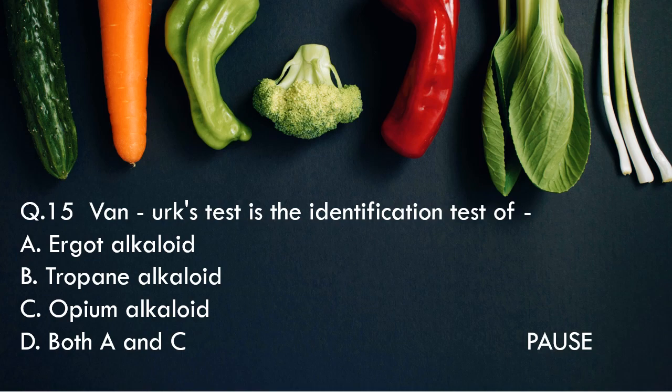Question 15: Vanark test is the identification test of — option A, Ergot alkaloid. Option B, Tropane alkaloid. Option C, Opium alkaloid. And option D, both A and C. And the right answer is Ergot alkaloid. So Vanark test is the identification test of Ergot alkaloid.